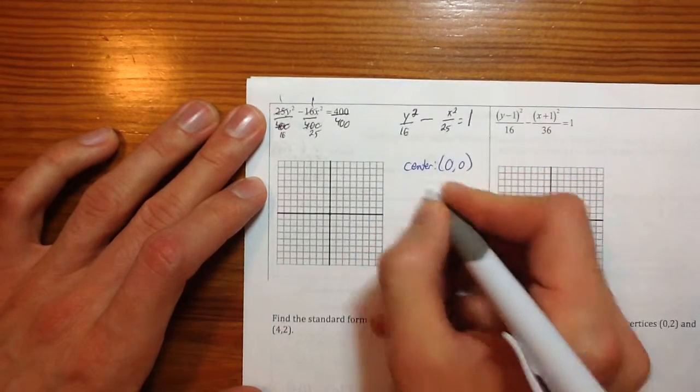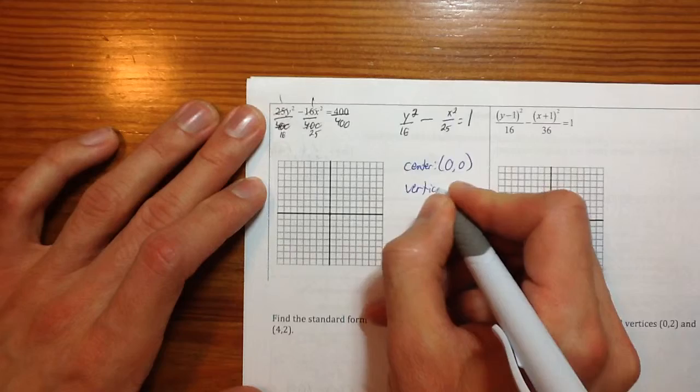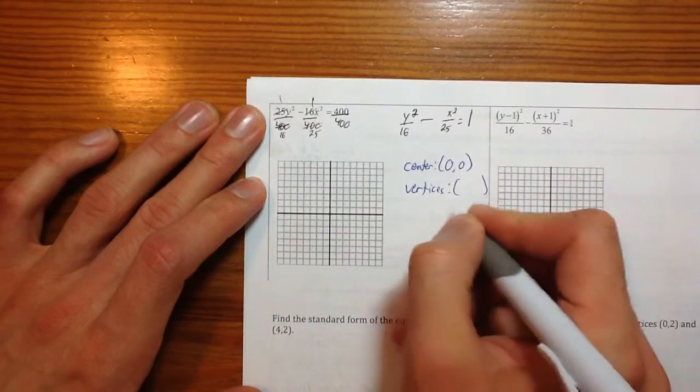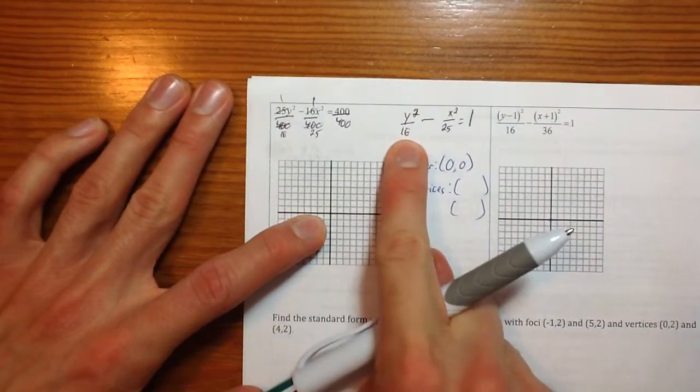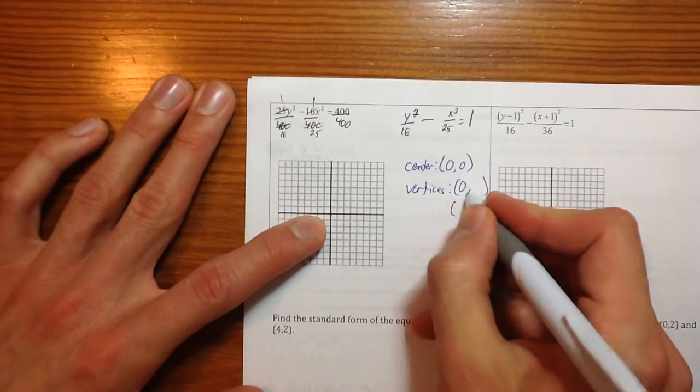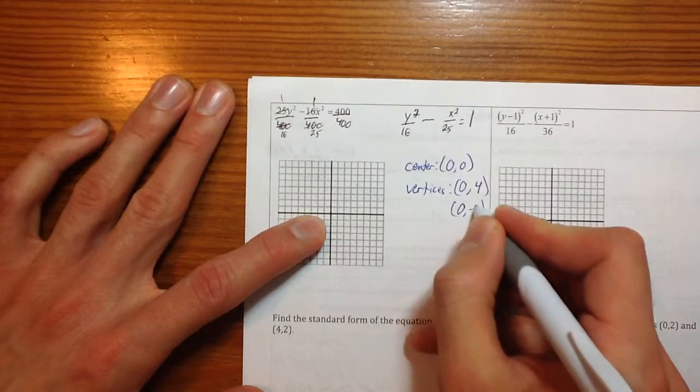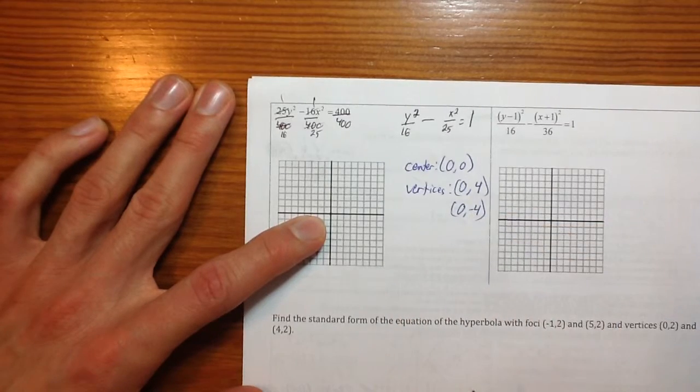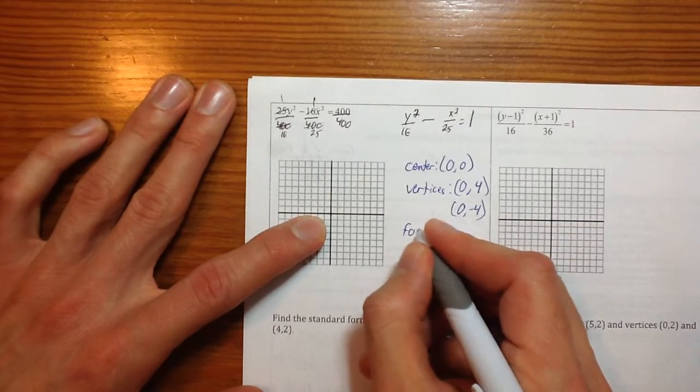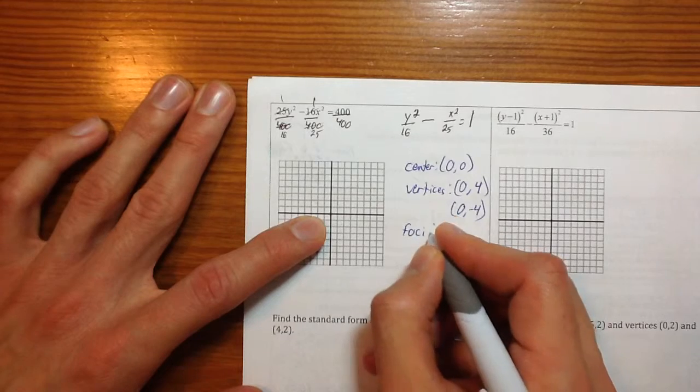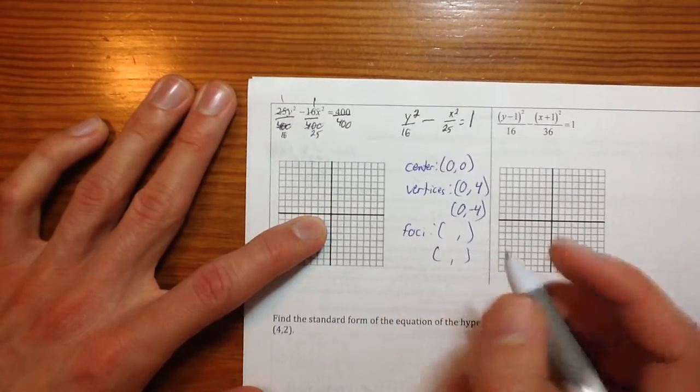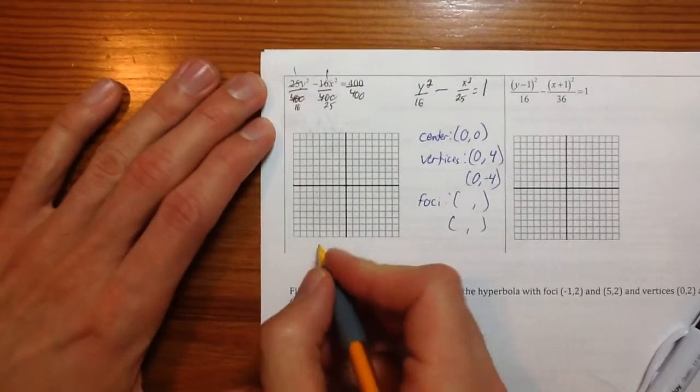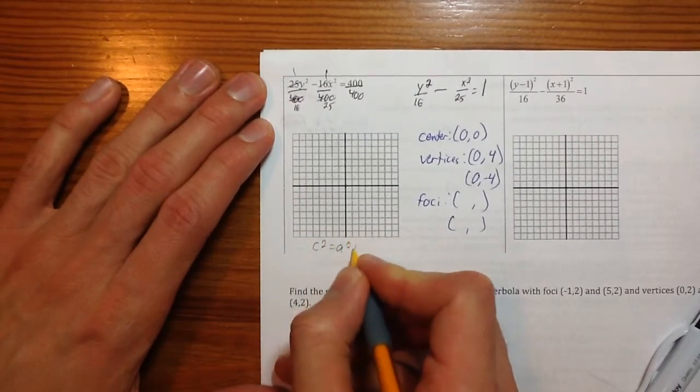The center is at the origin. There are two vertices. The vertices are going to be vertical from one another. So it's going to be (0, 4) and (0, -4). I could have done that plus and minus thing. I didn't. All right, my foci. We'll just use two coordinates on this as well. My foci are going to be C squared, A squared plus B squared.